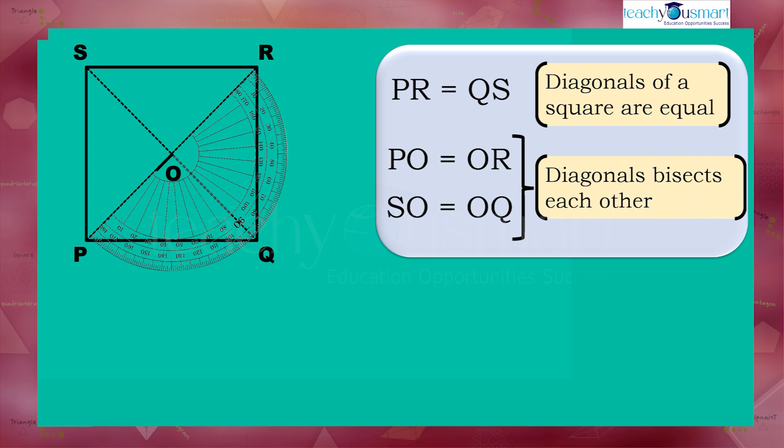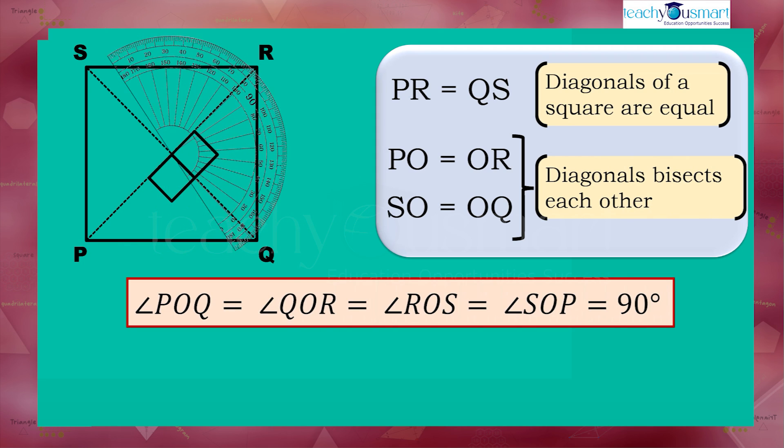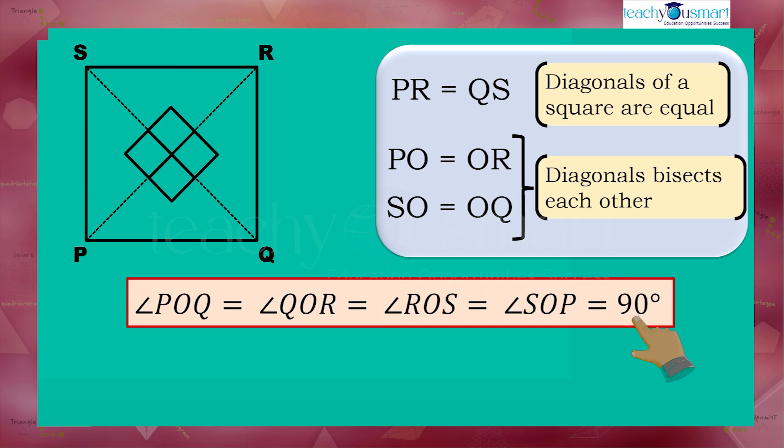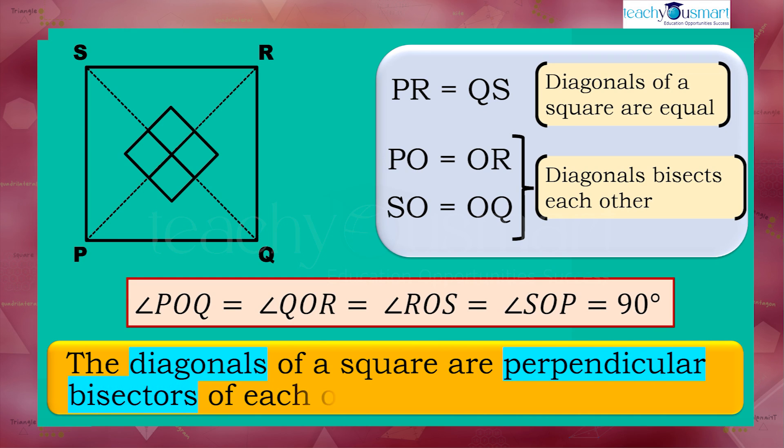That is, angle POQ equals angle QOR equals angle ROS equals angle SOP equals 90 degrees. That is, the diagonals of a square are perpendicular bisectors of each other.